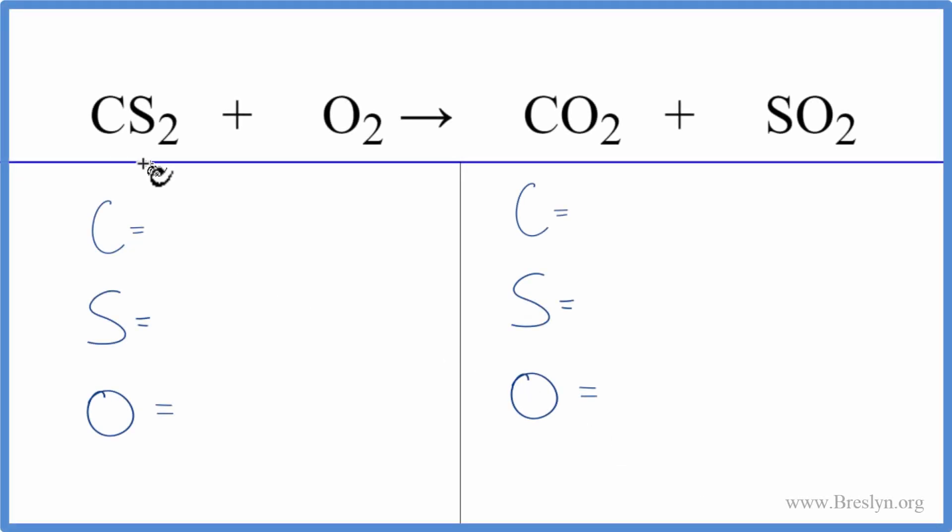In this video, we'll balance CS2 plus O2 yield CO2 plus SO2. So to do that, let's count the atoms up on each side.